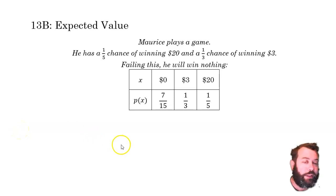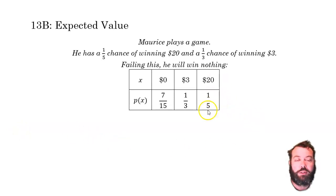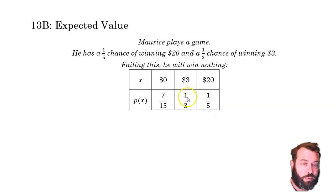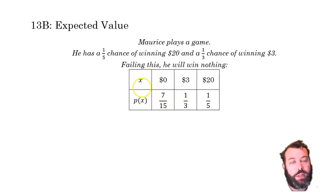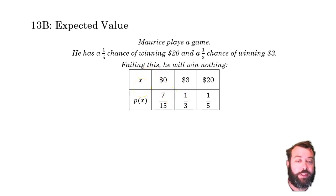Working out the probabilities: $20 was 1 in 5, $3 was 1 in 3. Knowing that our probabilities add up to 1, the probability of winning nothing would be 7 over 15. Okay, so far so good.